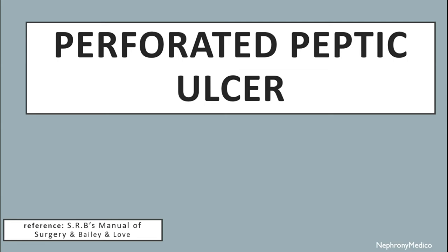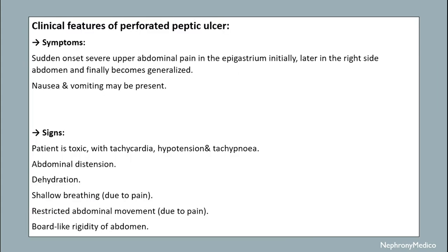Hello and welcome. Let's talk about perforated peptic ulcer. Clinical features: symptoms include sudden onset of severe upper abdominal pain in the epigastrium, initially on the right side of the abdomen and finally becoming generalized. Nausea and vomiting may be present. Signs include the patient being toxic with tachycardia, hypertension, and tachypnea, and abdominal distension.